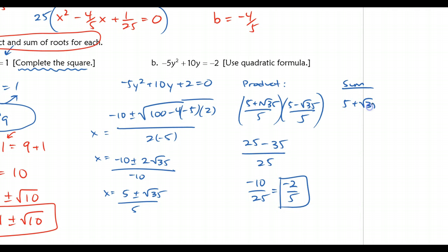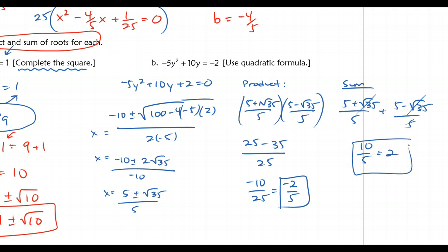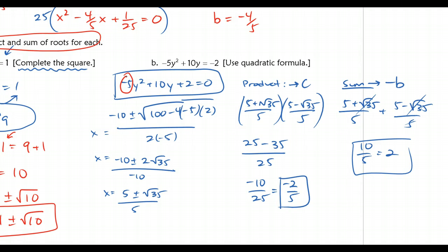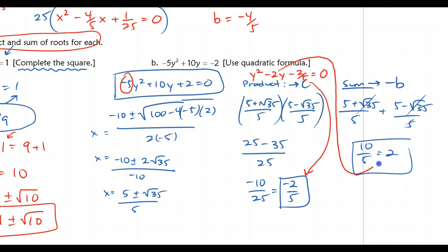Now the sum: adding the two roots, the √35 terms obviously cancel, leaving 10/5 or 2. Now I want to check these, because remember the product is supposed to be the c term and the sum is supposed to be the opposite of b. If we look at the original quadratic, these don't really match up because the lead coefficient is supposed to be 1. So if I divide out by that coefficient, I end up with a new quadratic: y² − 2y − 2/5 = 0. Now it does match — the c term is −2/5 and the b term's opposite is 2. So you have to make sure every time you're doing this that you have the form x² + bx + c with no lead coefficient other than 1.